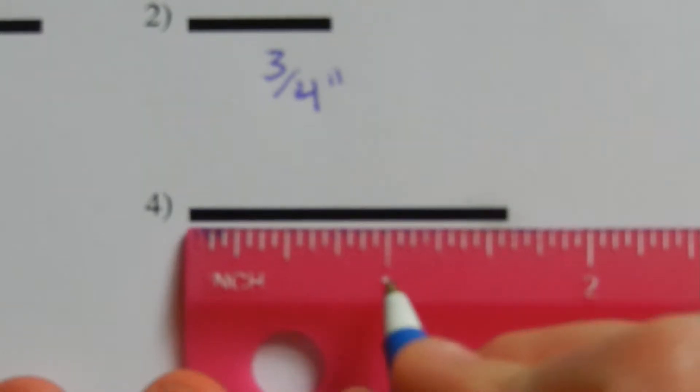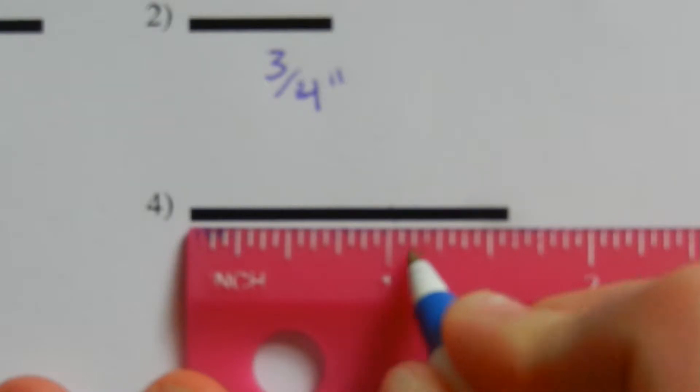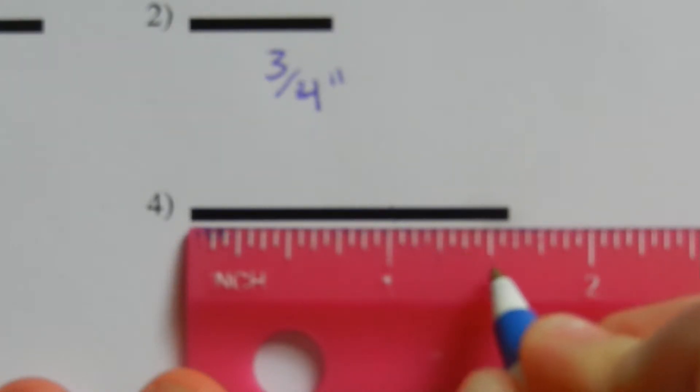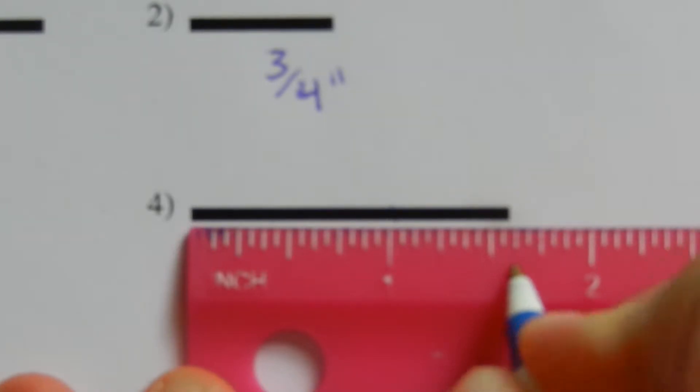Moving on to number four, lining our ruler up with the edge — here is one inch, and then we're going over one eighth, two eighths, three eighths, four eighths, five eighths. Five eighths cannot be simplified, so it's one and five eighths of an inch.